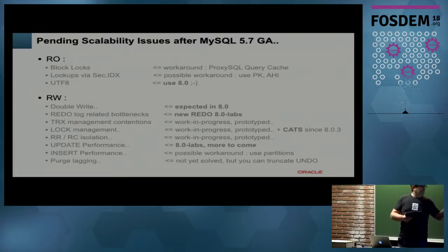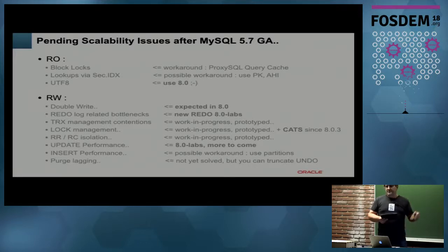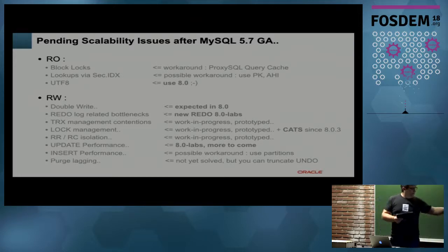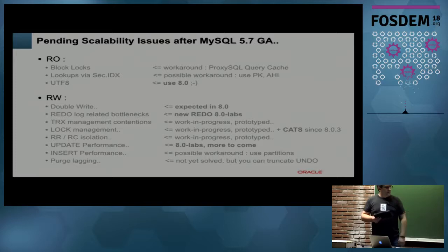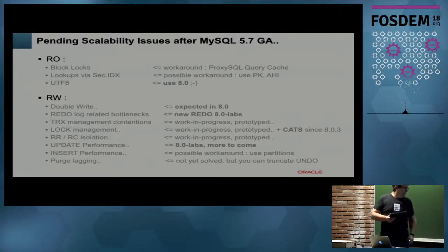For UTF-8, it's extremely faster now in 8.0. Before, in 5.7, you could be 10 times slower using UTF-8. Now in 8.0, it's only 10 to 20 percent slower than Latin-1 — huge progress. Double write is expected to be fixed in 8.0, so we won't speak about it here. I will tell you about the redo log changes we are doing. Transaction locking and lock management — I will speak about CATS, coming with 8.0. Transaction isolation is still work in progress. On update performance, it's directly related to redo logs.